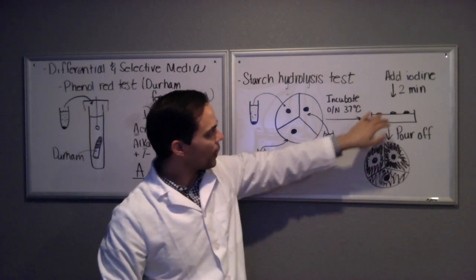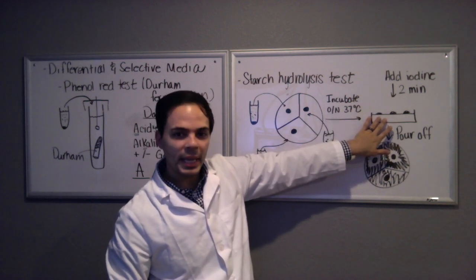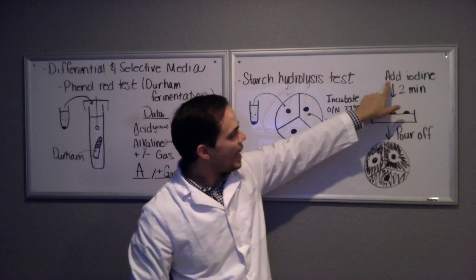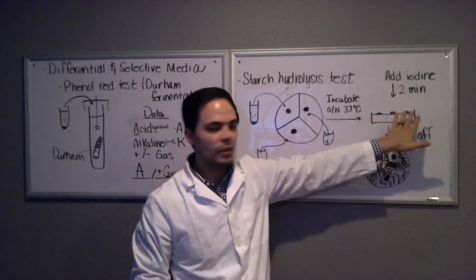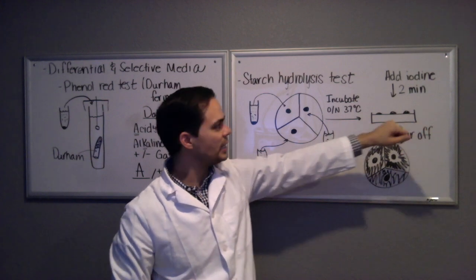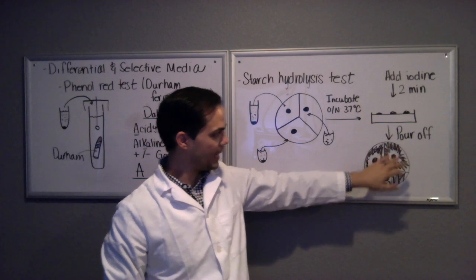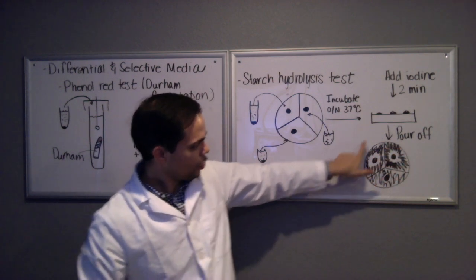Once you have good growth, you want to come back and open the plate and add iodine. So you flood the surface with iodine where you'll have bacteria growing, flood the whole thing with iodine, wait two minutes, pour off the iodine in the appropriate waste container, and then you want to observe the plate.